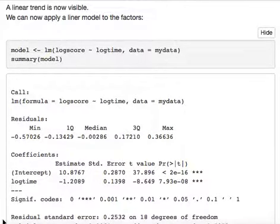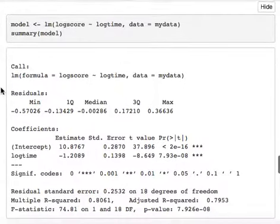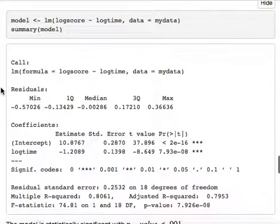Step 8: Apply a linear model. The model shows that the intercept and the log time are statistically significant with adjusted r squared at 0.7953.